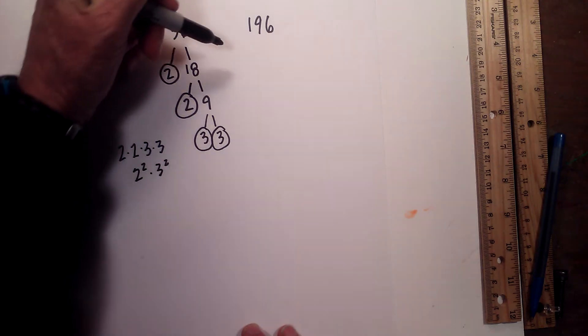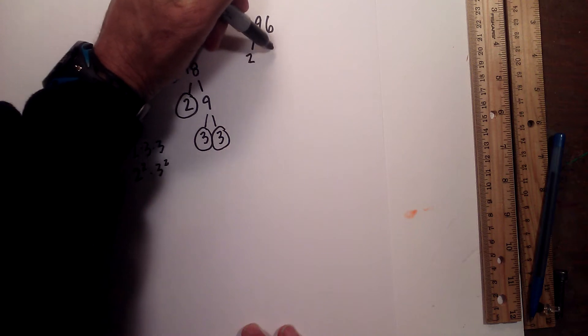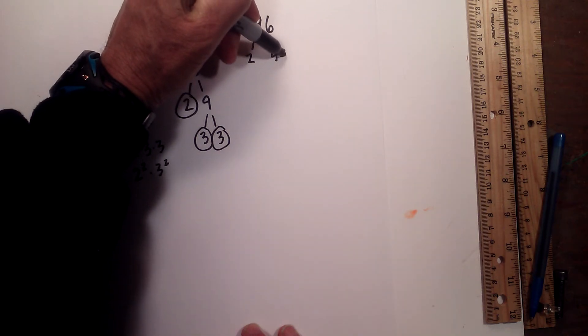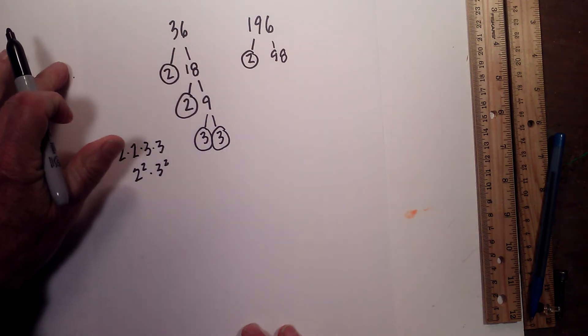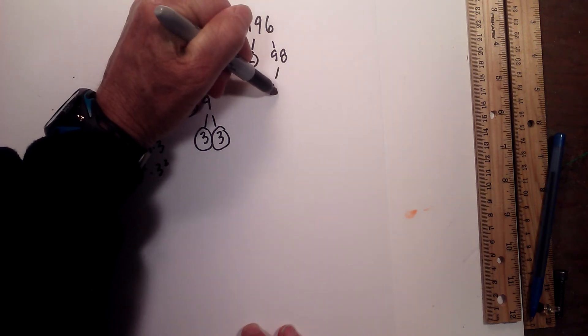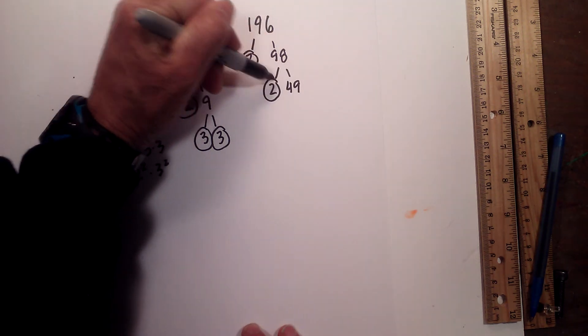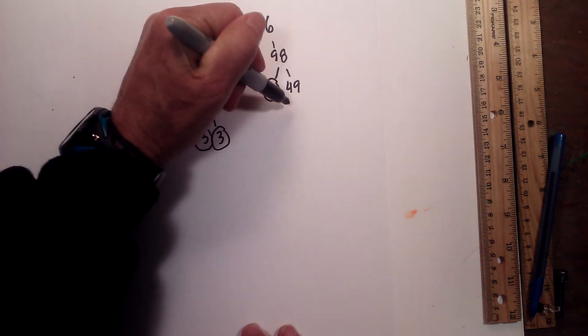Now let's look at 196. I'll begin with 2 times 98. Circle the 2 because it is prime. Now 2 times 49 equals 98. Circle the 2 because it is prime.